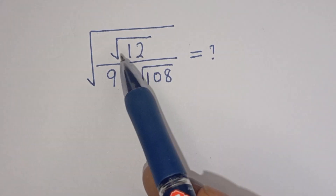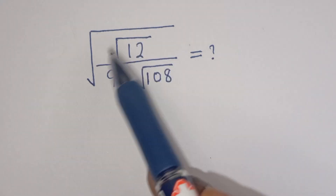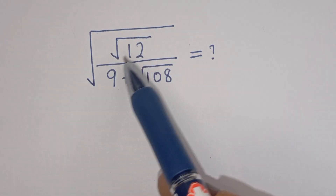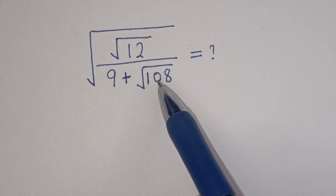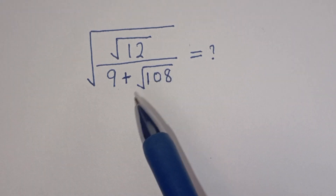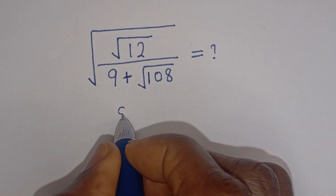Hello, how to solve this nice smart problem: square root of square root of 12 divided by 9, plus square root of 108. Solution.